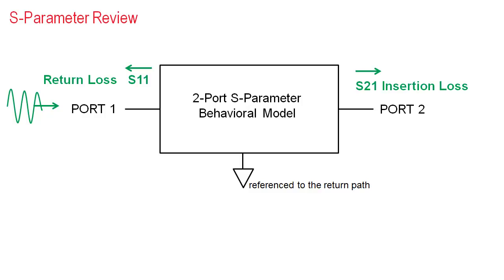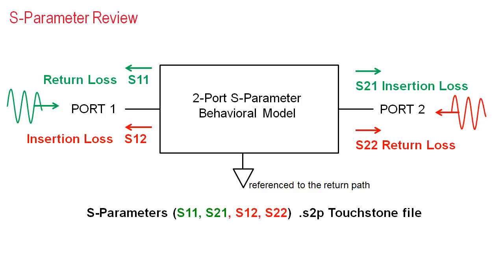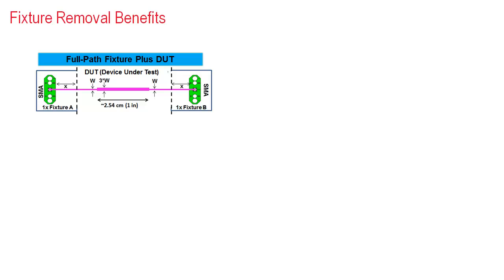If I excite port 1, then there will be an insertion loss term going through to port 2, called S21, and there will be a reflected return loss signal at port 1, called S11. Here we see that the first number of the S-parameter refers to the port where the signal is being measured, and the second number refers to the input port. Now I can do the same thing, but this time excite port 2 to get the S12 insertion loss and S22 return loss behavior. These 4 S-parameter frequency domain measurements provide a behavioral model of this 2-port system, and can be saved in the touchstone ASCII format with an S2P file extension. Mathematically the S-parameter model that was easy to measure can now be converted to a T-matrix for simple matrix multiplication to de-embed the behavior of the fixture from the measurement.